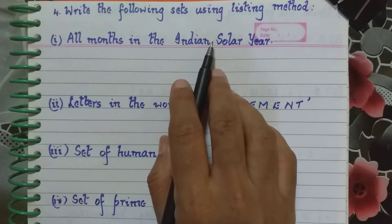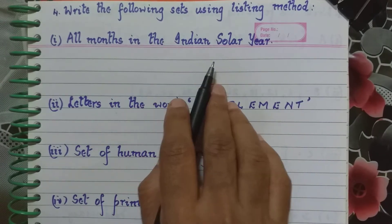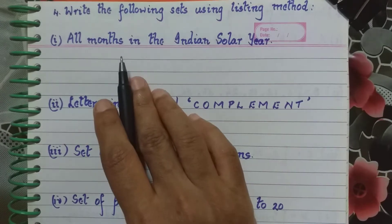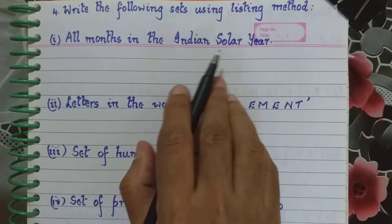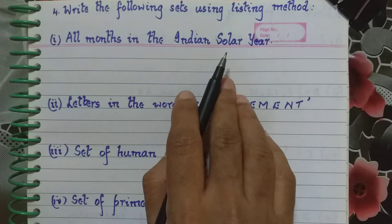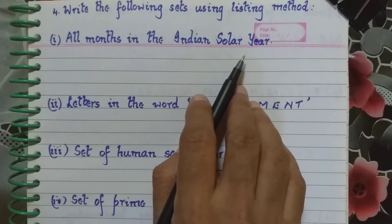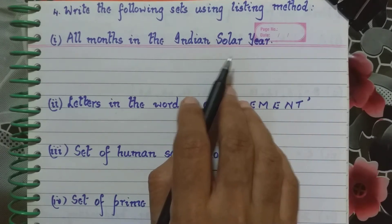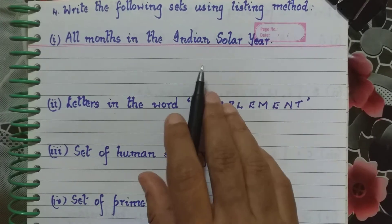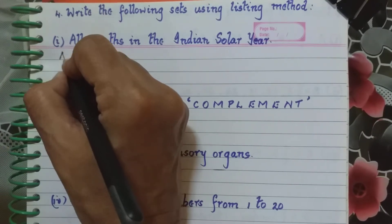Fourth question: Write the following sets using listing method. First sub-question, all months in the Indian solar year. Now you know that Indian solar year consists of 12 months. Those names may not be so familiar to you and me, but we have to write it according to what they have asked us. Before we write the months, you have to remember we have to name the set. So let us name the set as A.